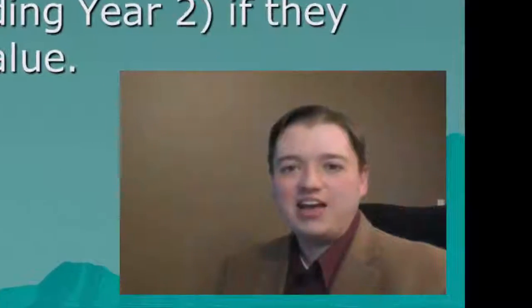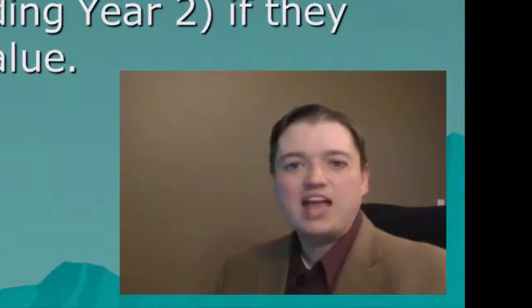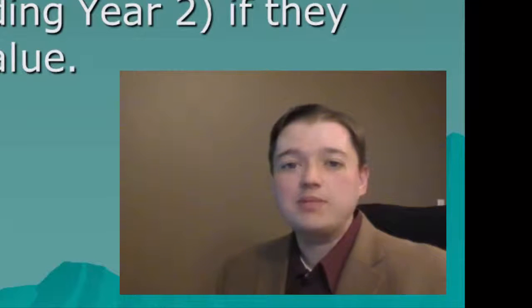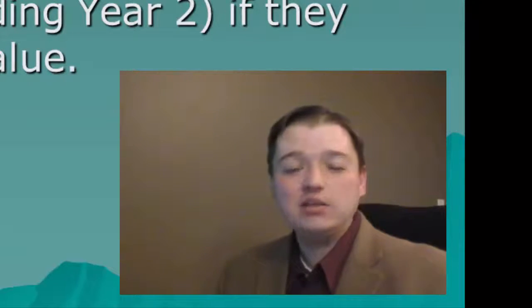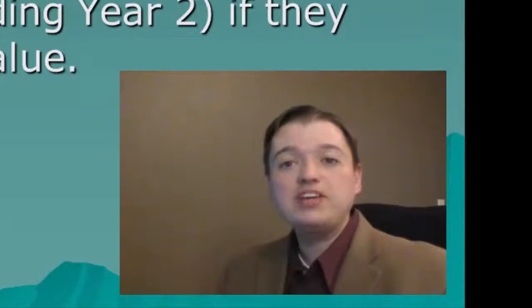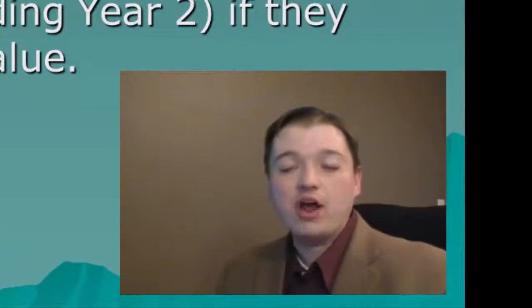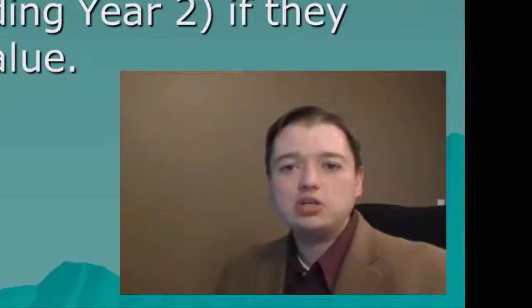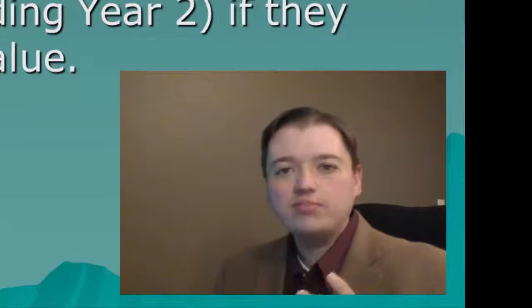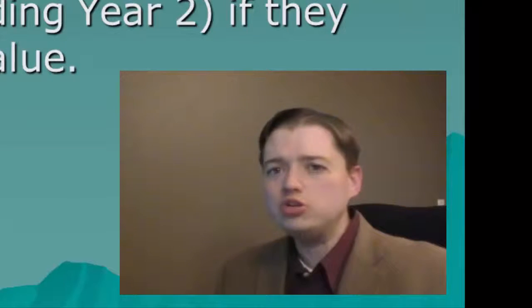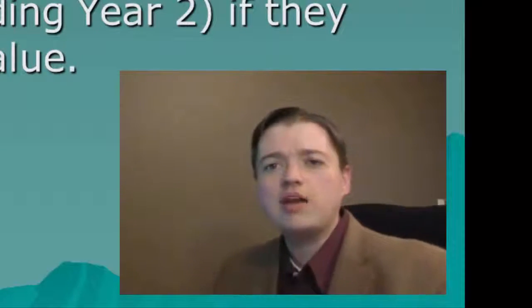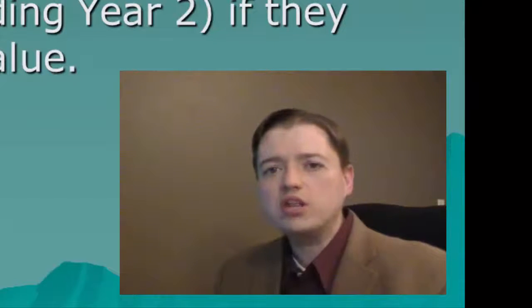Welcome back to our intermediate financial accounting class. Over the last few segments we've been talking about the income statement — what it is, why it's important, and how to build the most common style, the multi-step income statement. We also talked about different styles under US GAAP and IFRS. And then we started talking about the unusual events or line items. There were four of them that we specifically mentioned, and we said we'd focus on the other four.